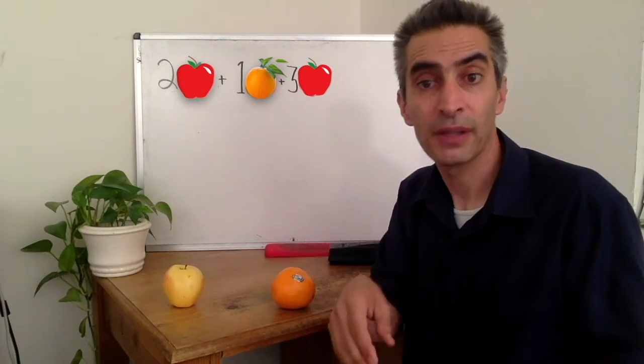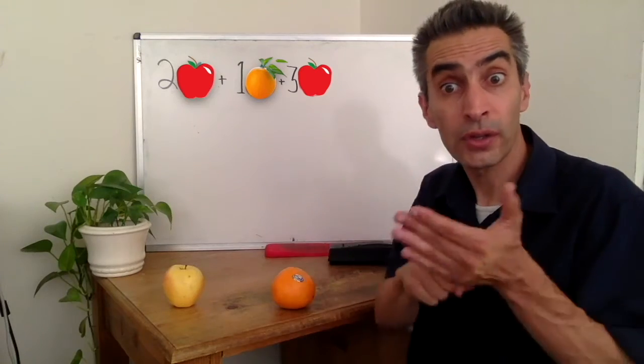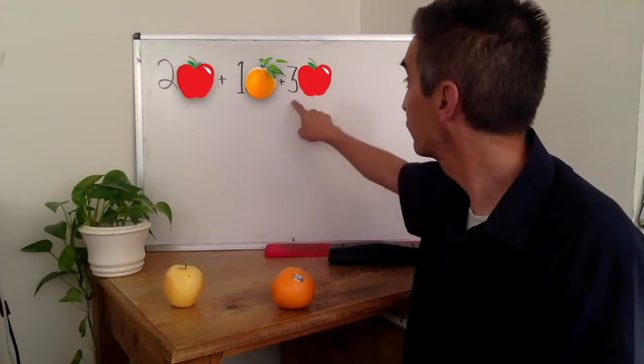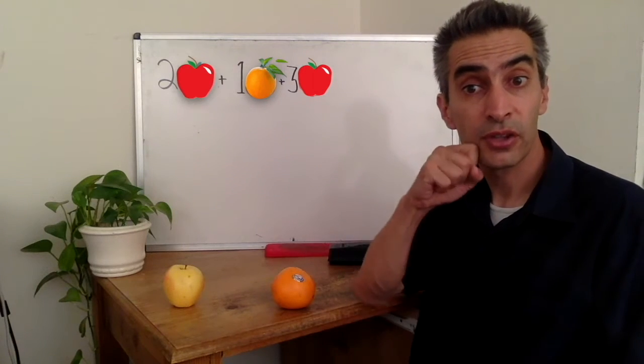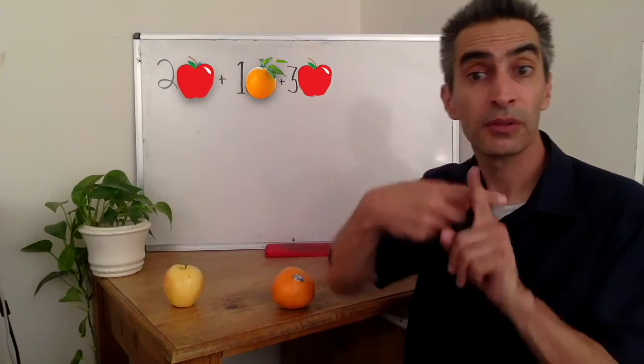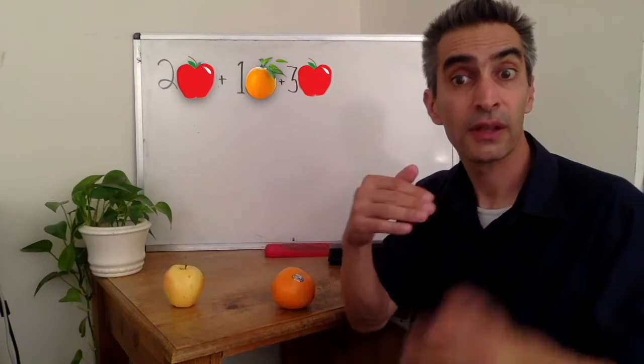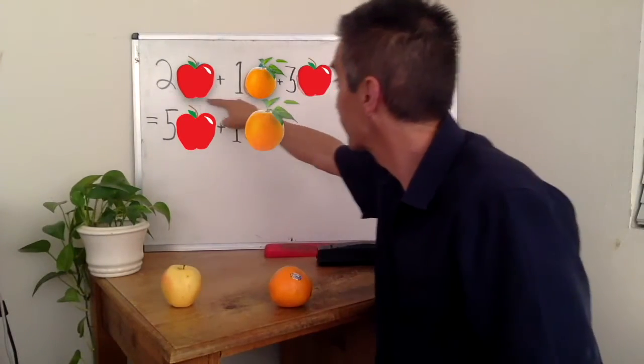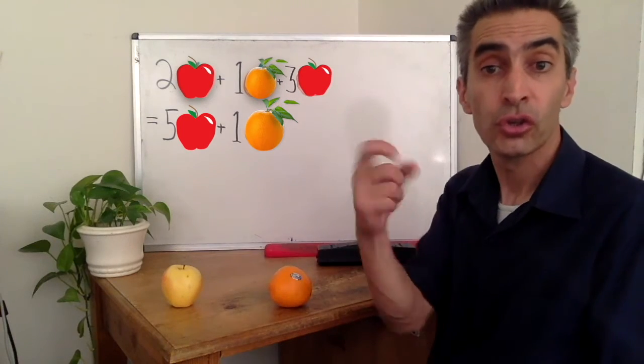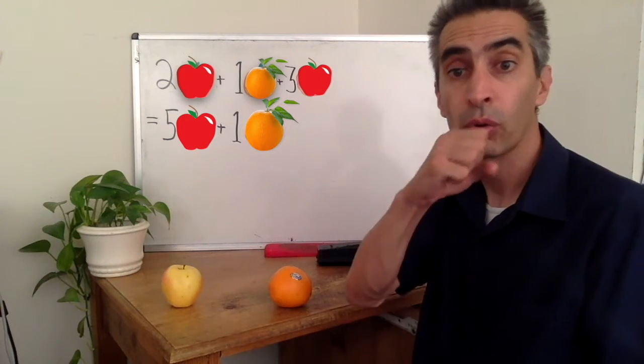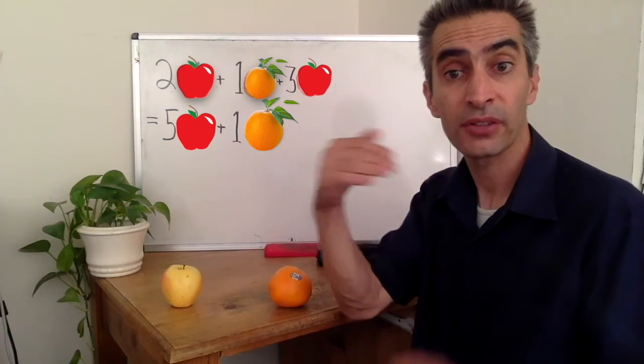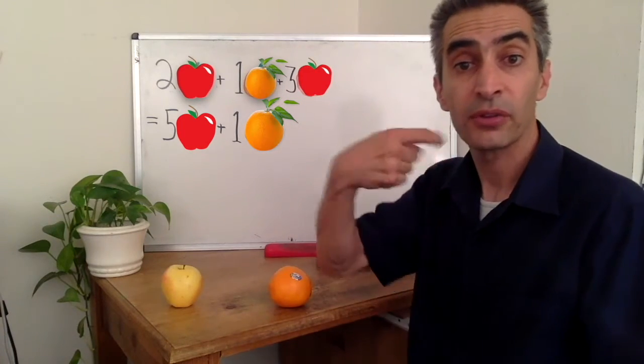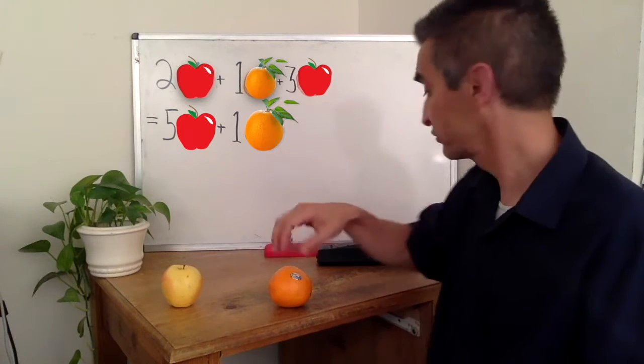We must add up the apples. Notice, the 2 is with the apple and the 3 here is with the apple. 2 apples plus 3 apples equals 5 apples. 2 apples plus 1 orange plus 3 apples equals 5 apples plus 1 orange.